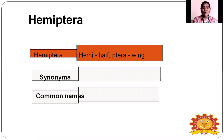Insect Order Hemiptera. So Hemiptera — what is the etymology of Hemiptera? Hemi is the first half of the word, meaning 'half.' The second half, 'ptera,' refers to wings. So half-winged insects are characterized under this order, Hemiptera. It is a Greek word.